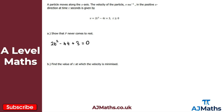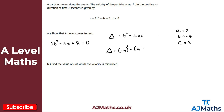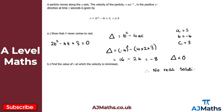To investigate whether there are real solutions, I use the discriminant: Δ equals b² minus 4ac. Here a equals 2, b equals minus 4, and c equals 3. So the discriminant equals (−4)² minus 4 times 2 times 3, which gives 16 minus 24, equalling minus 8. Since the discriminant is less than zero, there are no real solutions, and therefore p never comes to rest.